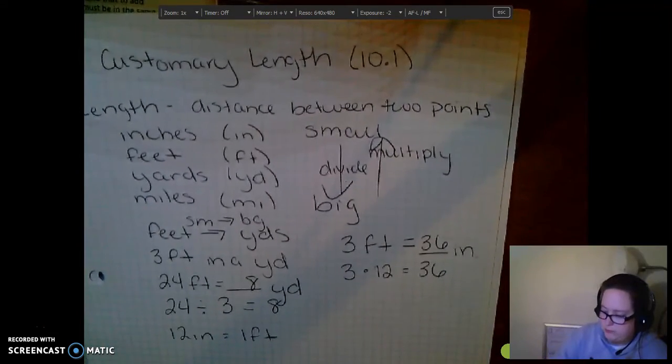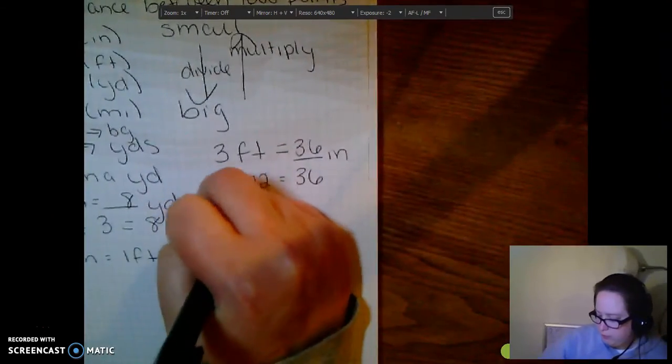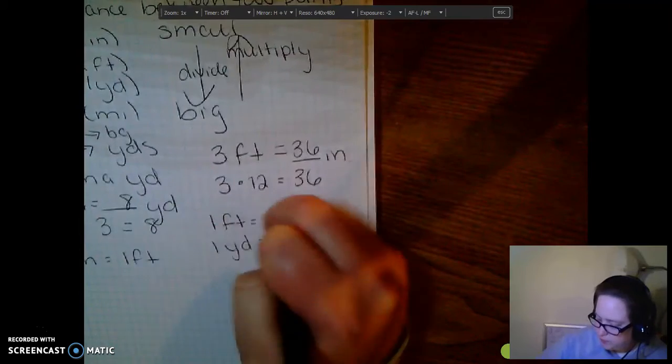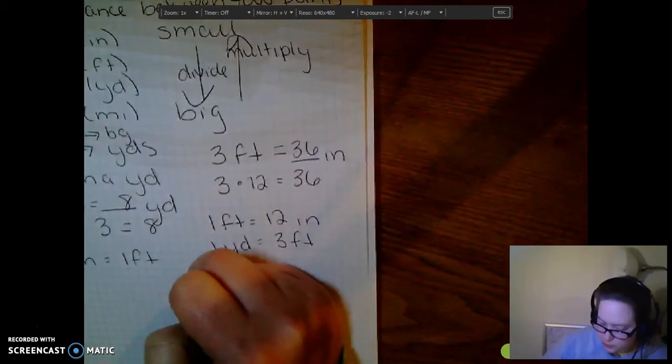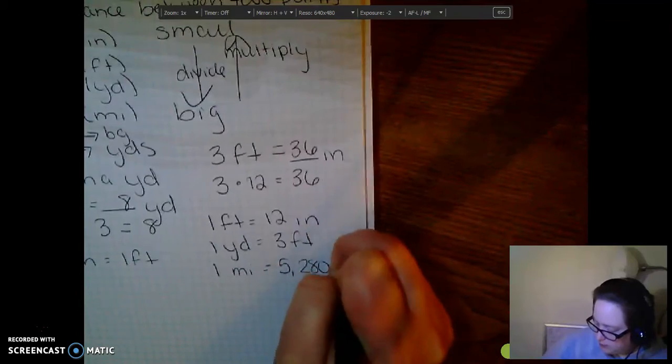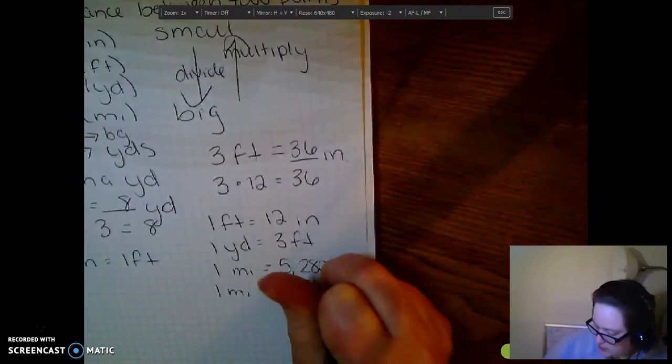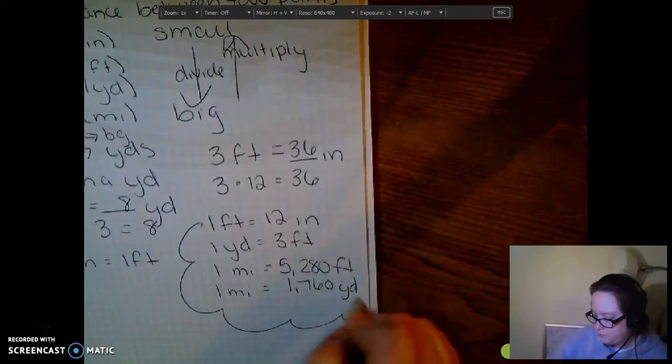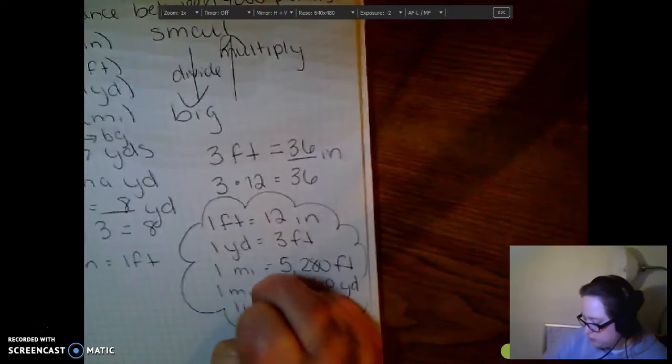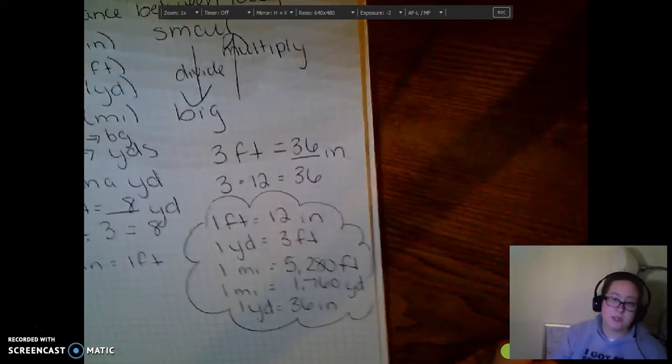So, if you want to know your major conversions, I'm going to make a little table here. We have one foot equals 12 inches. One yard equals three feet. One mile equals 5,280 feet. And one mile also equals 1,760 yards. So, these are your big conversions. You also have one yard equals 36 inches. So, those are your main conversions that you'll be using for this.